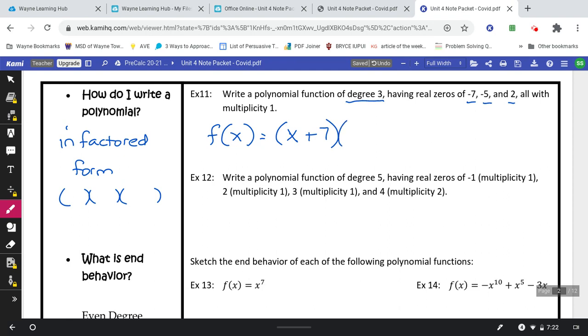And just double check. All has a multiplicity of 1. That just means my exponents on each are 1. And a degree of 3, meaning I have a total of 1, 2, 3 x's represented.